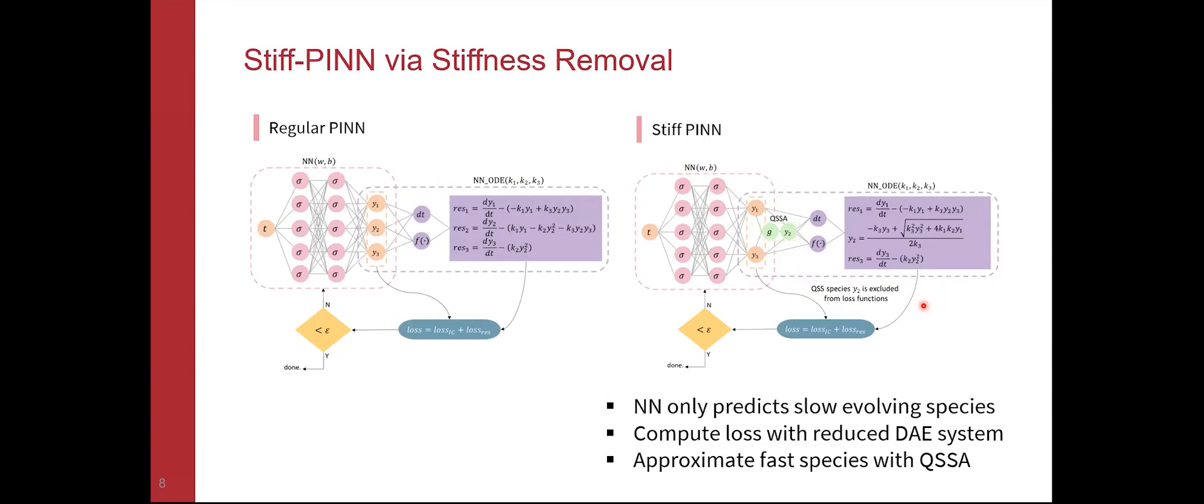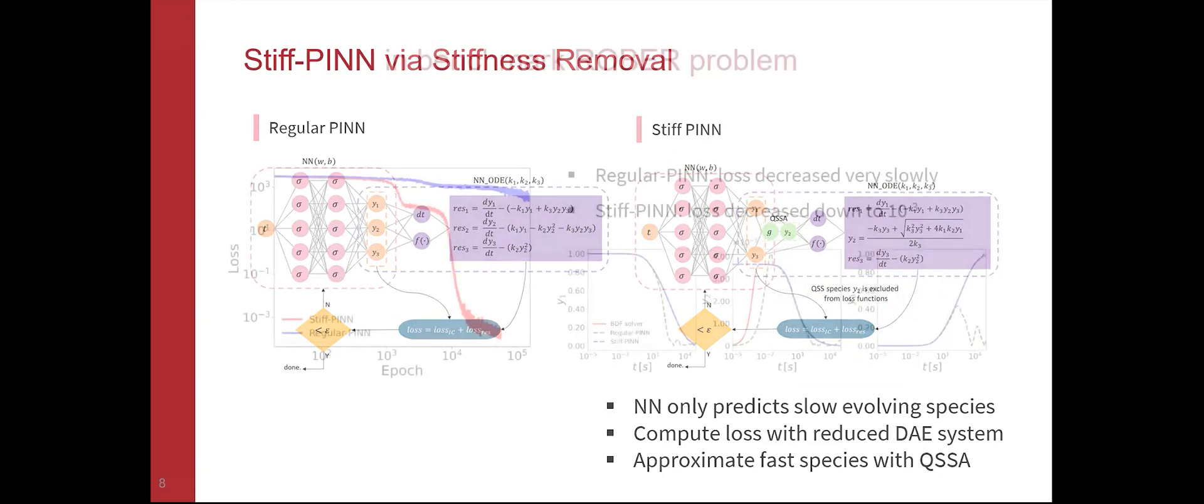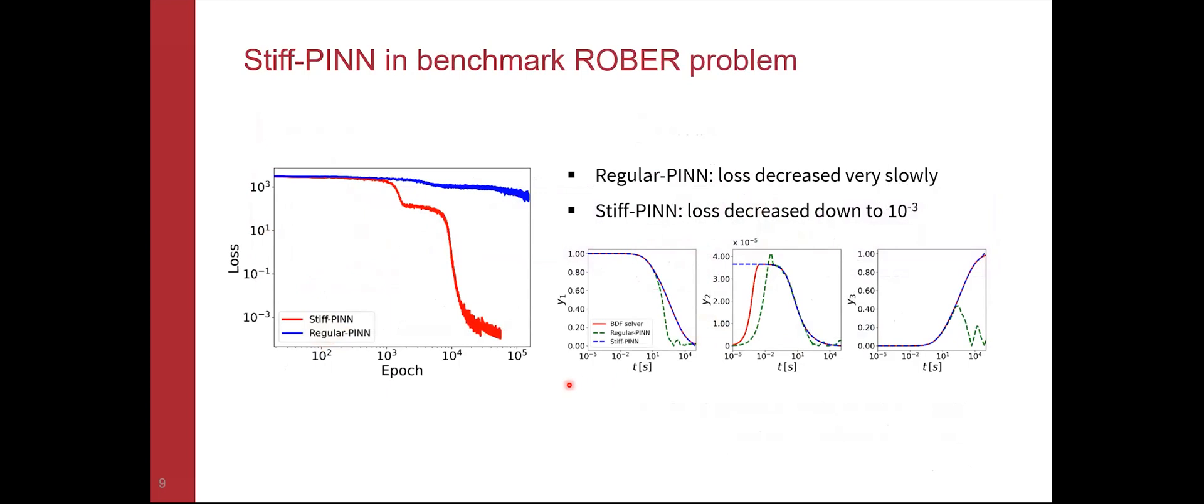That's the general idea of QSSA. Then we figure out how to encode this QSSA into the PINN framework. The idea is that in the neural network side, we only predict the slow evolving species, and then we approximate those faster evolving species using the QSSA module. A very important thing is that we also exclude the loss for the faster evolving species from the loss function. We have found that it's very important and useful to exclude them.